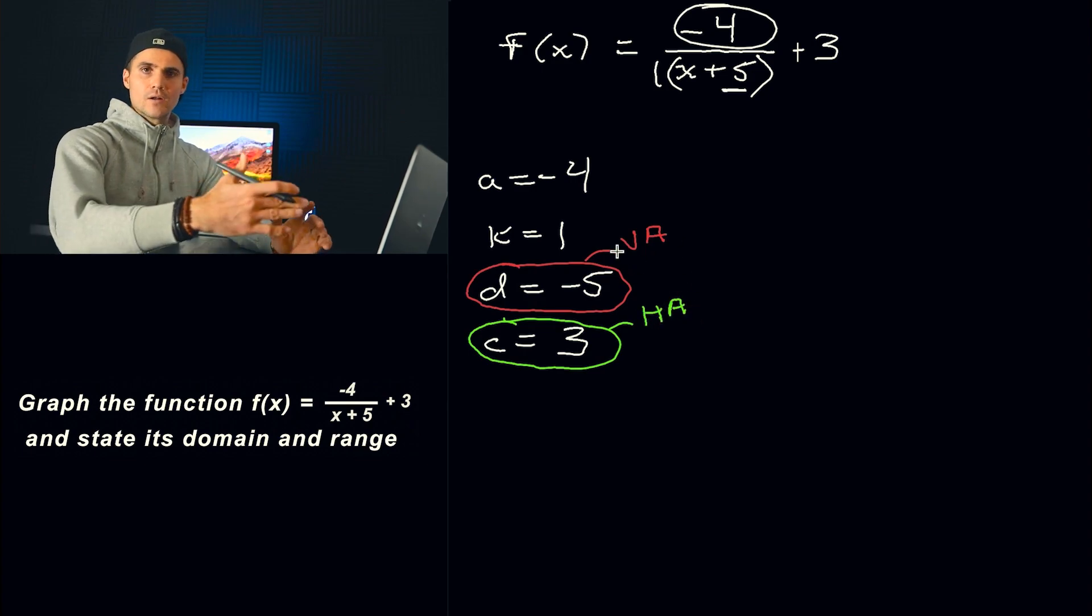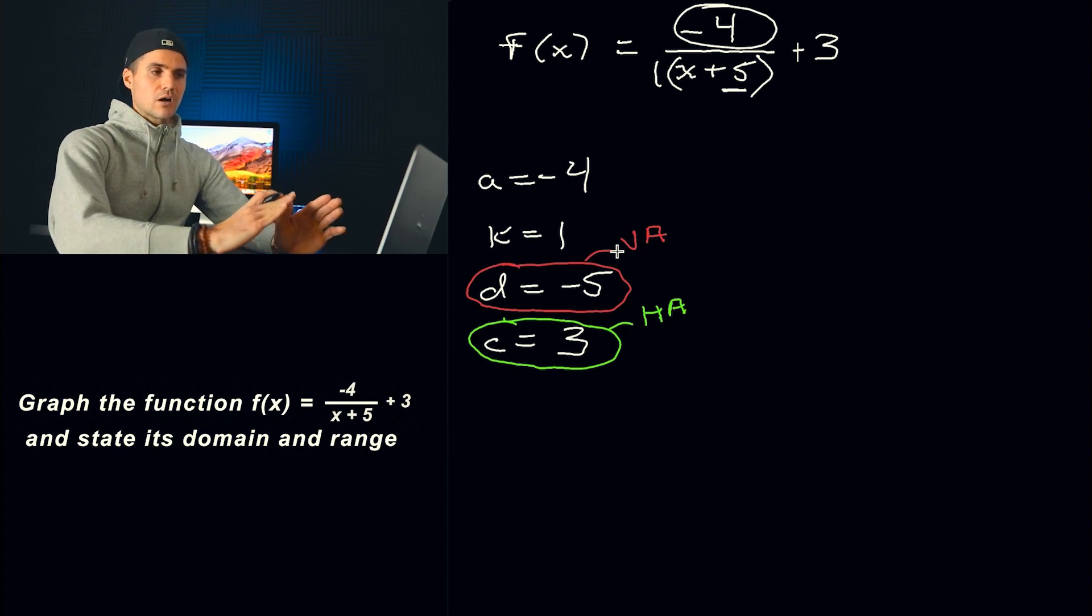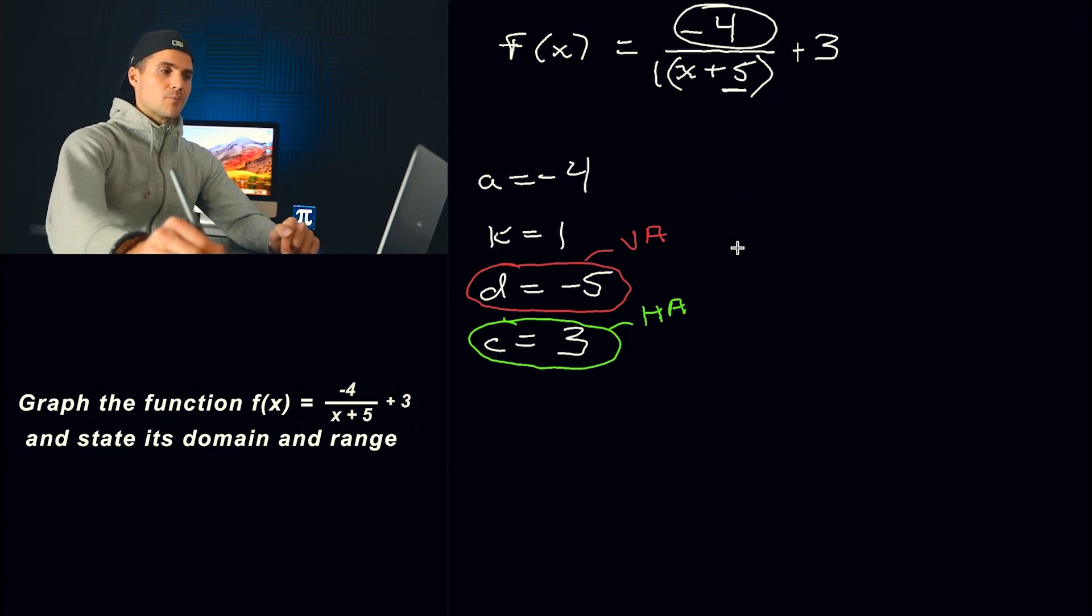And that's going to help us when we end up graphing this function. I always like to draw the asymptotes first, and then I like to plot the points around those asymptotes, just so we can know, or to better see what the shape is going to be. Now, the reciprocal function, the parent function, y equals 1 over x, what's the table of values that we use?